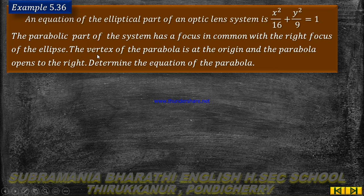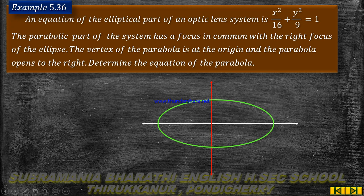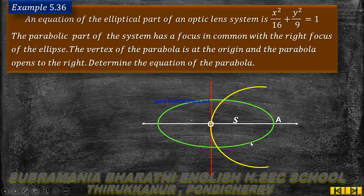The right side focus is common between the two. The vertex of the parabola is at the origin. The parabola opens to the right. The focus is the right focus of the ellipse. The parabola is open to the right. The vertex is on the ellipse axis.